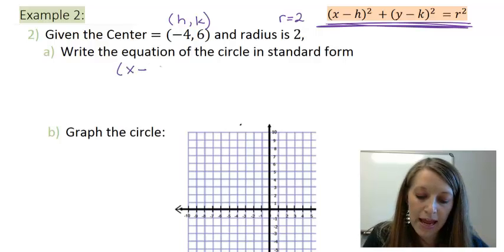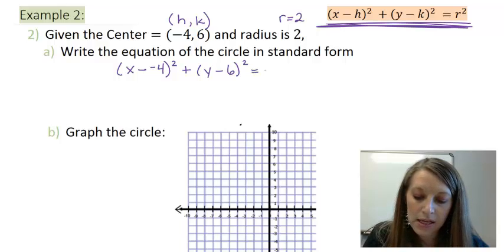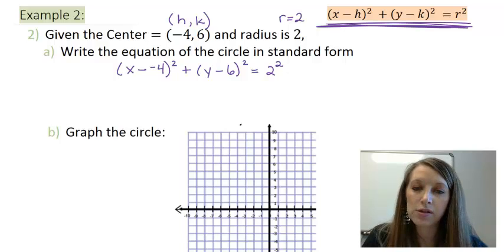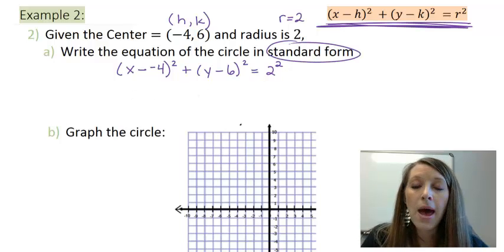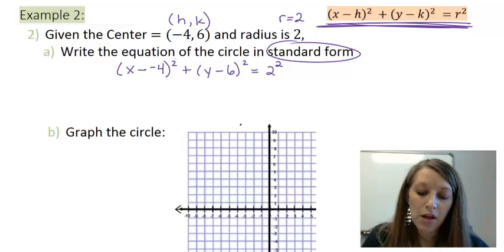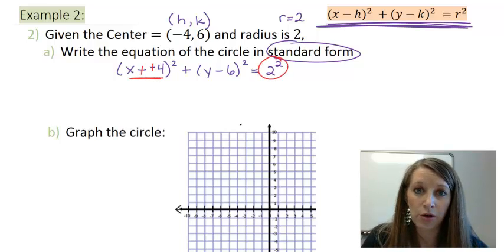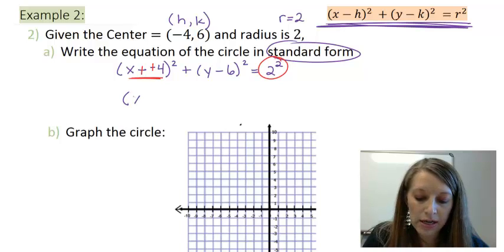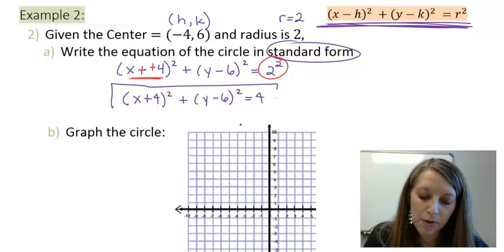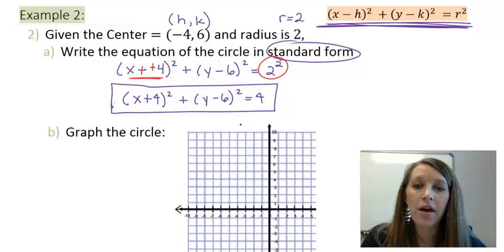So I have (x - (-4))², plus (y - 6)², is equal to my radius, which was given as 2 squared. So I want to leave it in this format as much as possible, because that's what it means by standard form. But I still want to simplify as much as I can. So the things that I'm going to simplify is I'm going to cancel out my double negatives here, and I will actually square this value there. So my final answer is (x + 4)² + (y - 6)² = 4. So that's the most simplified version of my standard form of this equation.